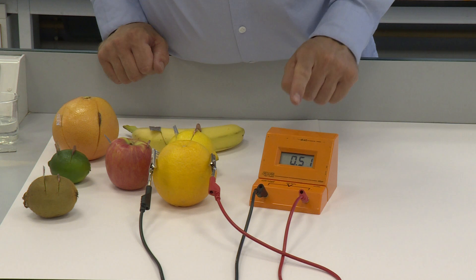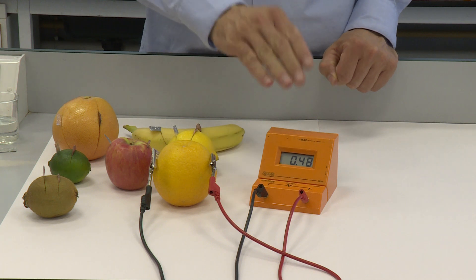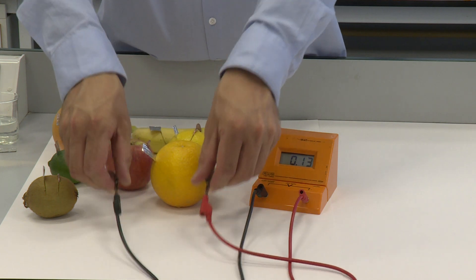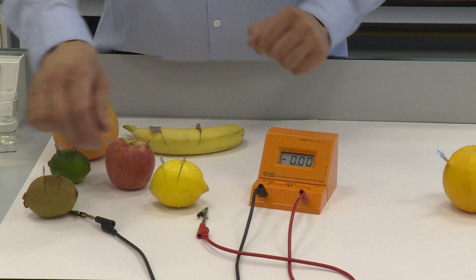And now we can see that the reading is 0.52. You can see it moves about a little bit, but it's about 0.52 for the orange. Now detach that, we'll move the orange to the side, and now we'll do the lemon.